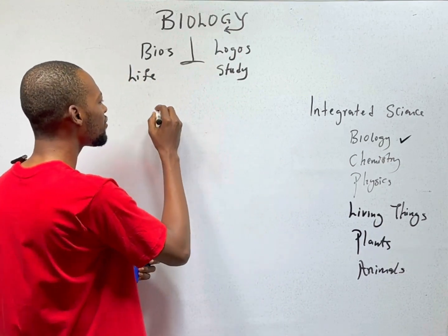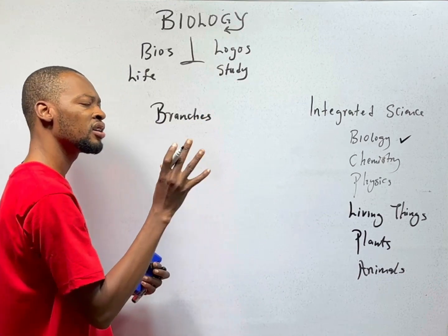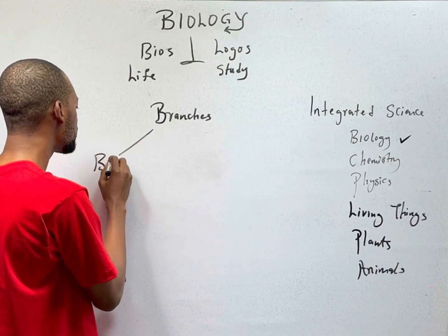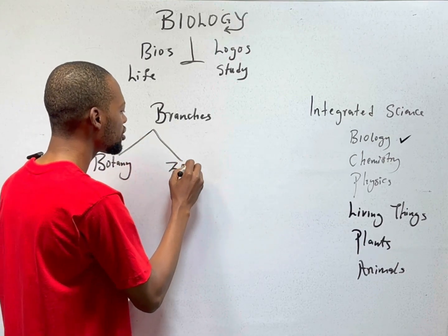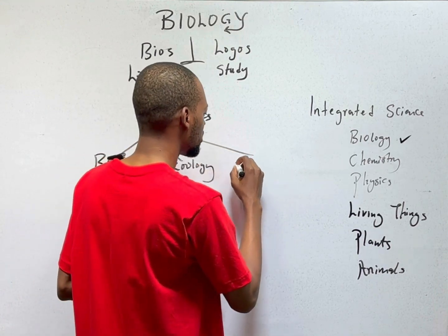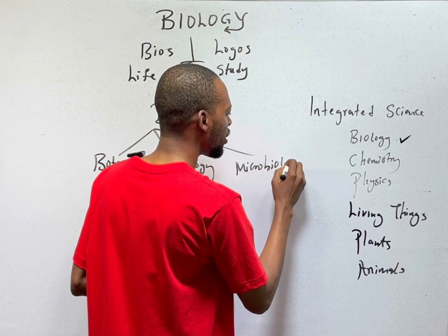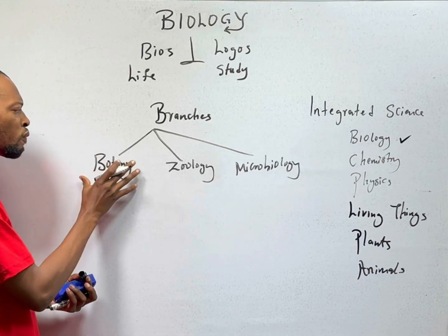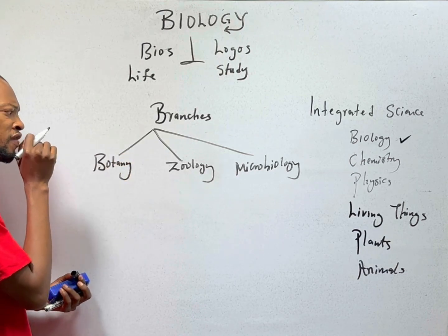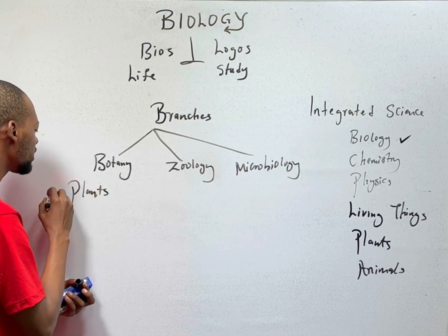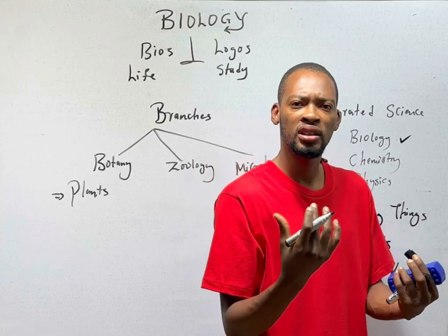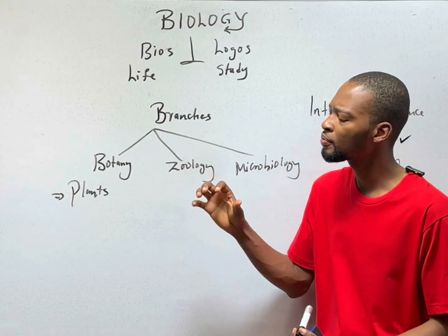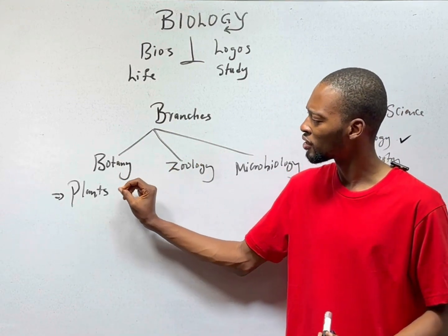Biology has several branches. But the top three we shall be quickly looking at are botany, zoology, and microbiology. I shall display other branches on the screen for you to look at them. Botany simply deals with the study of plants — everything that has to do with, or all that concerns, the study of plants. So if you are studying a branch of biology dedicated to plants, you say that you are studying botany.